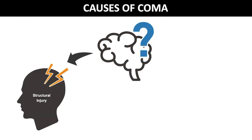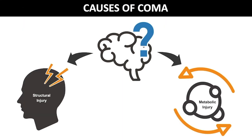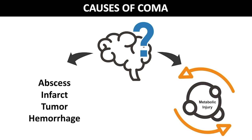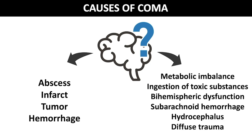Coma can be caused by structural or metabolic injury. Structural damage to the thalamus or reticular activating system can occur as a result of an abscess, infarct, tumor, or hemorrhage, and can lead to focal neurological deficits. Non-focal neurological damage can occur from metabolic imbalance, ingestion of toxic substances, or bihemispheric dysfunction resulting from expanding compressive subdural hematomas, subarachnoid hemorrhage, hydrocephalus, or diffuse trauma.